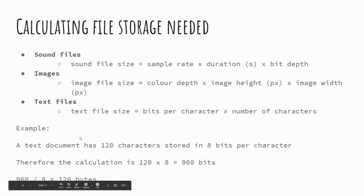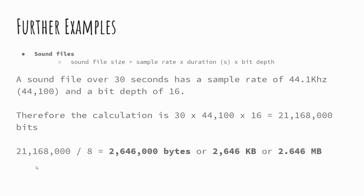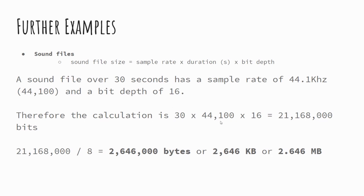For example, a text document of 120 characters at 8 bits per character gives 960 bits. Dividing by 8 gives 120 bytes. For an audio file — a 30-second clip at 44,100 samples and 16-bit depth — you get 21,168,000 bits. Divide by 8 to get bytes, then divide by 1000 to get kilobytes (2,646 KB), then divide again by 1000 to get 2.646 megabytes — giving the file size in its most appropriate format.